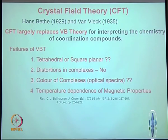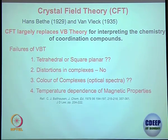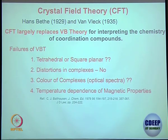A lot of information you cannot get from valence bond theory, like why a specific compound is colored, or what happens to magnetic properties — these are the things we are really interested in. So this is where crystal field theory comes in. It is based on the failure of valence bond theory, where valence bond theory kind of fails and crystal field theory basically picks up.